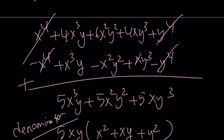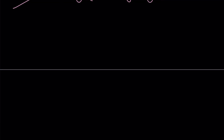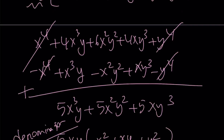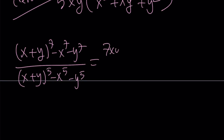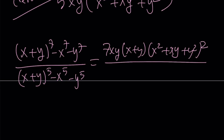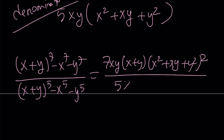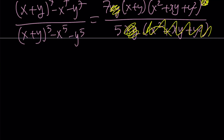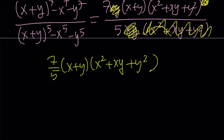I got the numerator and I got the denominator. Let's go ahead and put it together and simplify our expression. Our original expression was x plus y to the seventh, minus x to the seventh, minus y to the seventh, all divided by the same thing with fifth powers. That equals my numerator: 7xy times x plus y times x squared plus xy plus y squared, all squared — over the denominator: 5xy times x squared plus xy plus y squared. Finally, we can simplify: xy cancels out, and one of the x squared plus xy plus y squared also cancels out, leaving us with 7 over 5 times x plus y times x squared plus xy plus y squared. And that is our answer.